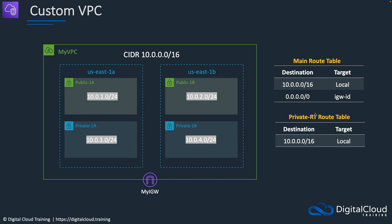We've also created a private route table for our private subnets, which are currently completely detached from the internet — which is fine for many use cases. Sometimes you'll want to attach them for outbound traffic, for example to access repositories for downloading updates. In that case, you would launch a NAT gateway in a public subnet and then add the route. Let's go ahead and do that so you can see how it's done.